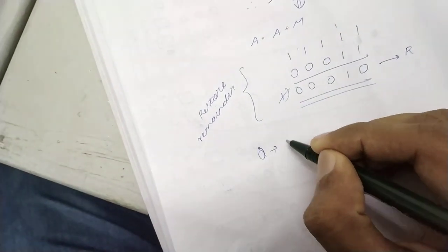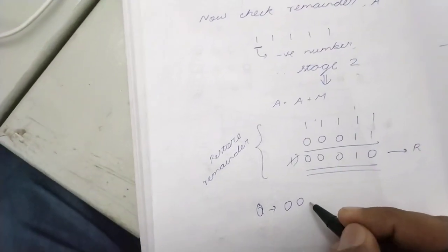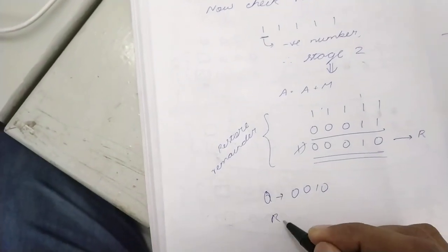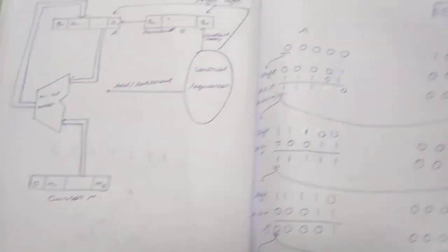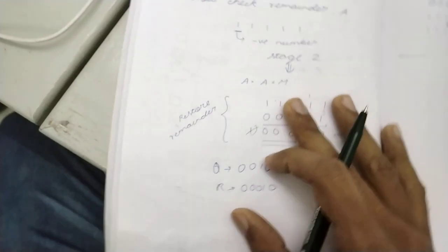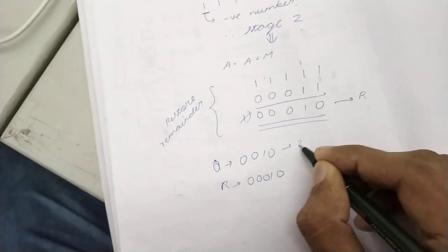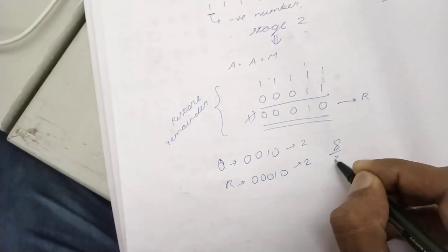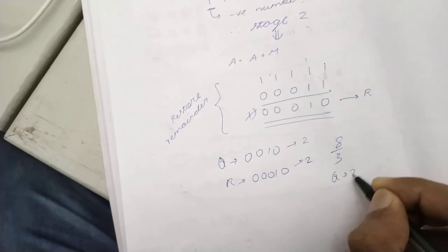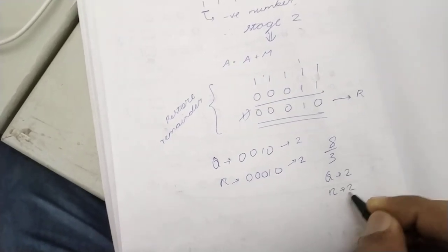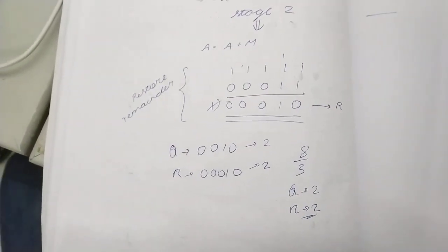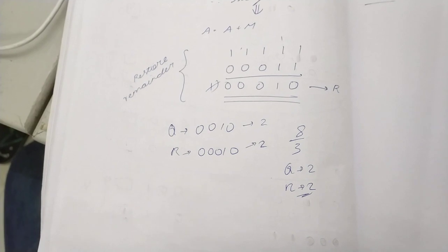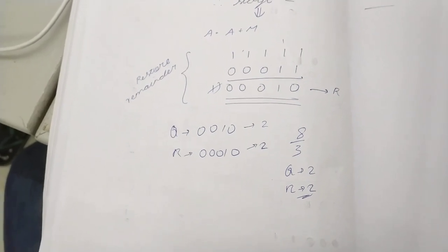Finally, the quotient is 0010 (which is 2) and the remainder is 00010 (which is 2). This is correct: 8 divided by 3 gives quotient 2 and remainder 2. That is how we do integer division. With that, the whole topic has come to an end. Happy exam, thank you.